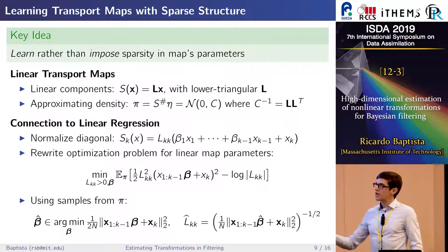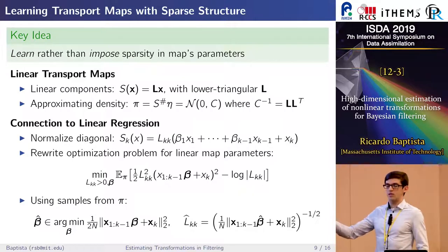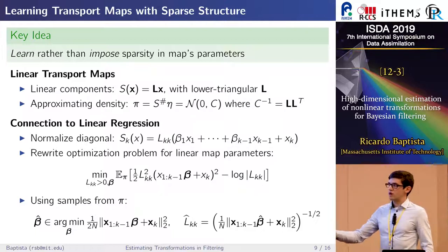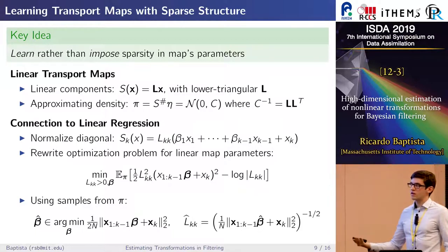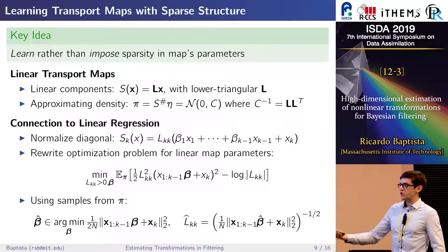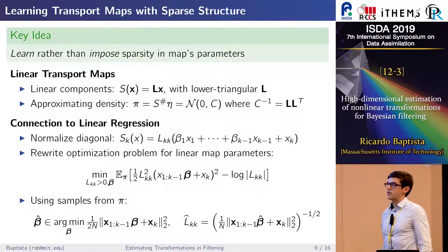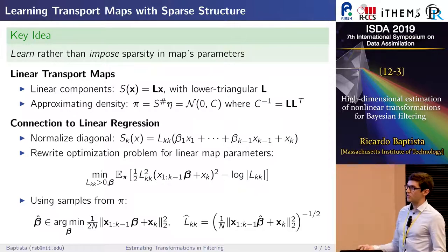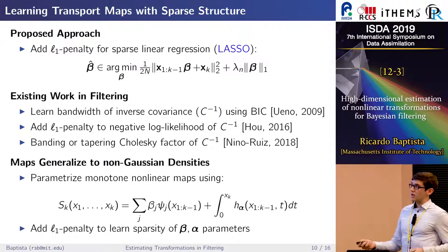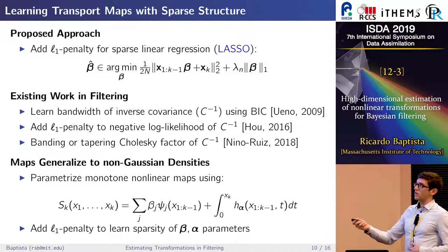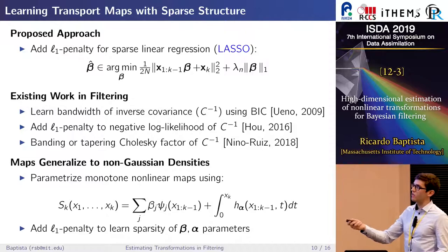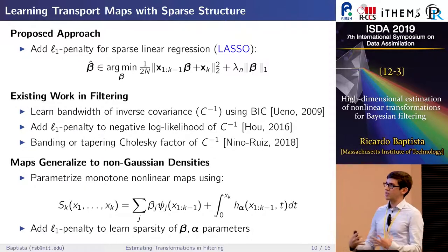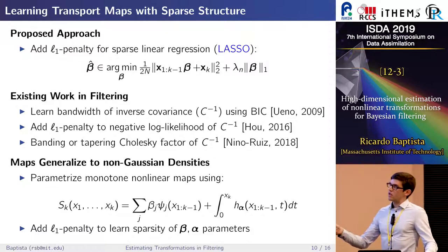If conditional independence exists in pi, the map is sparse and doesn't depend on all variables — this should appear at the parametric level. Since this reduces to linear regression, one way to build estimators that exploit the fact that many betas are sparse is by solving LASSO problems that add L1 penalties to these regression problems and shrink some parameters.